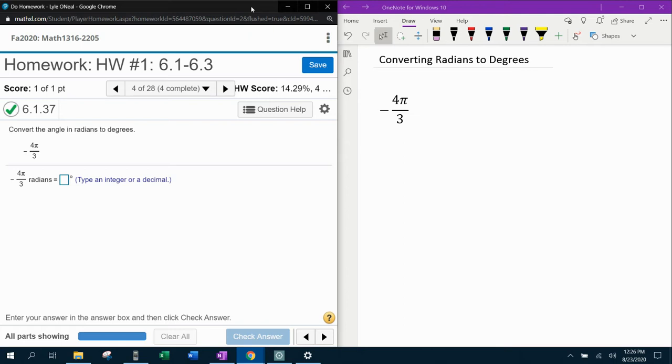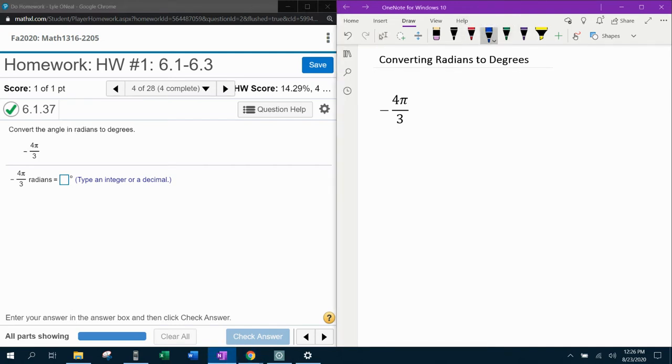So we're going to take negative four pi over three and we're going to convert that from radians to degrees. The way you do that is you multiply by 180 over pi. That is your converter to go from radians to degrees.